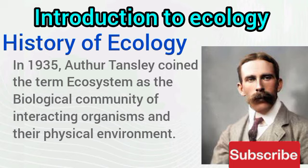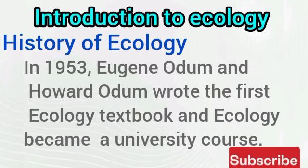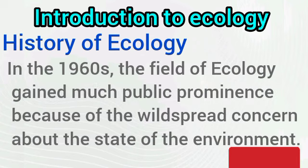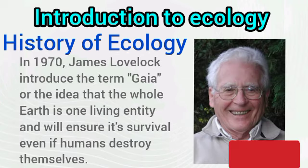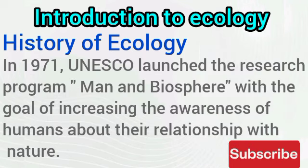Arthur Tansley in 1935 coined the term ecosystem as the biological community of interacting organisms and their physical environment. In 1953, Eugene Odum and Howard Odum wrote the first ecology textbook and ecology became a university course. A widespread concern about the state of the environment made ecology gain public prominence in the 1960s. In 1970, James Lovelock introduced the GAIA hypothesis — the idea that the whole earth is one living entity and will ensure its survival even if humans destroy themselves.